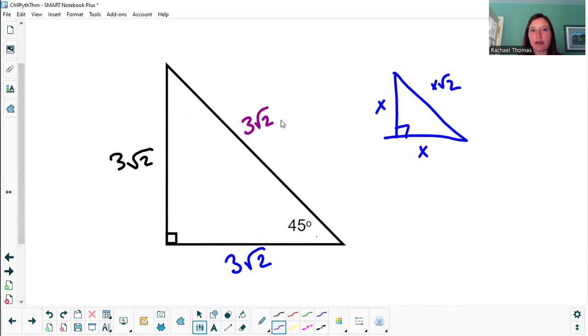So my hypotenuse will be 3 times the square root of 2 times the square root of 2. You might be able to get away with that as a final answer in your class, but I bet we can make this a little bit simpler. The square root of 2 times the square root of 2 would be the square root of 4. That's just 2. So this becomes 3 times 2, or 6. That would be my final answer.